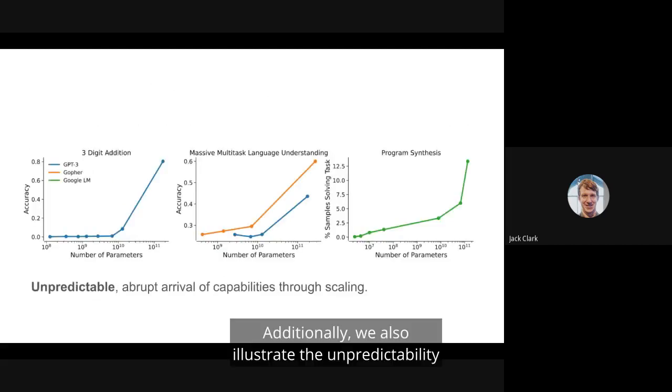Additionally, we also illustrate the unpredictability of these models by looking at a few simple capabilities and how they emerge as a consequence of scale. In the case of three-digit addition, GPT-3 is really bad at it until you scale up to a large enough amount of parameters. Similarly, for massive multitask language understanding, most models are bad at this until you go through some kind of scaling wall. And the same follows for techniques like program synthesis as well. We see this pattern repeat where new capabilities appear somewhat unpredictably as a consequence of scale.